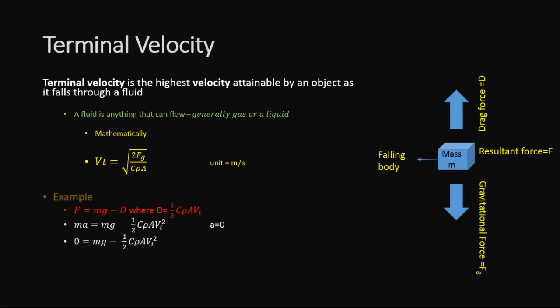The left hand side of the equation becomes 0 = mg - (1/2)CρAVt². Here, doing a little mathematics, we transfer the right hand term (1/2)CρAVt² to the left side, which equals mg.